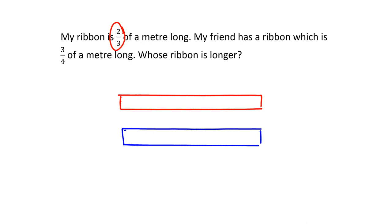So what I need to do is I need to take this ribbon and get two thirds of it. I need to cut it up into three equal pieces. Those are all thirds and I need to take one, two of them. So that's my two thirds of a meter long ribbon.